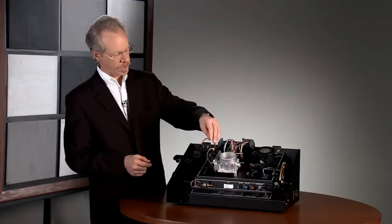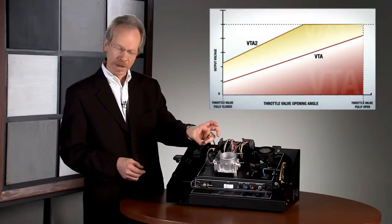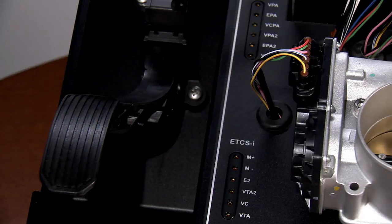Similarly, there are two position sensors on the electric throttle assembly. When the motor drives the throttle open, both sensors have to confirm it's moved to the correct position or it'll be shut off.